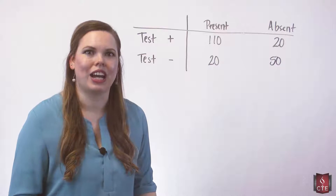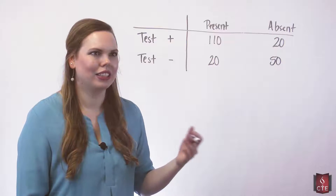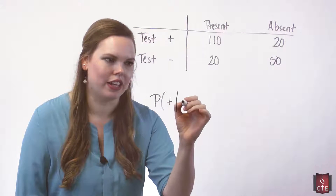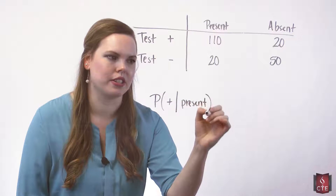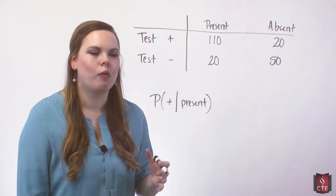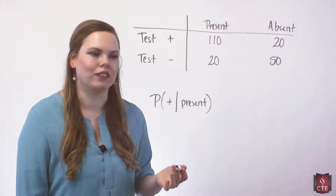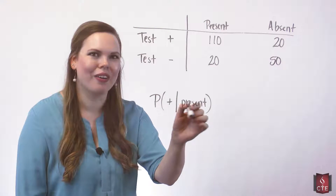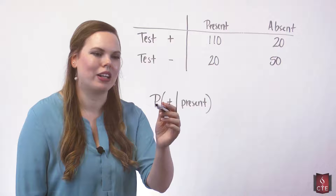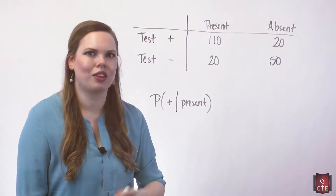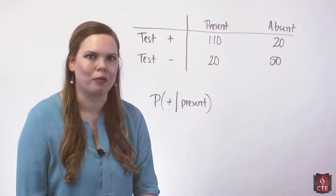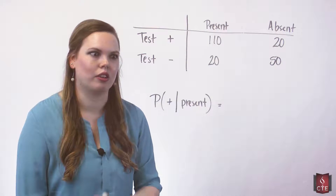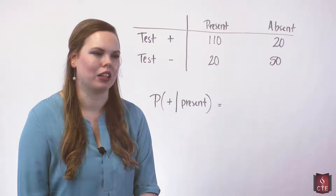This type of table is used a lot when we're testing whether a medical test is good or not. So let's look at some probabilities considering this. What is the probability that we get a positive result, given that the condition being tested is present? So we know that this patient has this condition — what is the probability that the test would reveal a positive result? This is a conditional probability. I know something about the problem before I'm really solving it. I'm going to walk through two different ways we can do this: one is just thinking through and looking at it, and another is using the conditional probability formula.